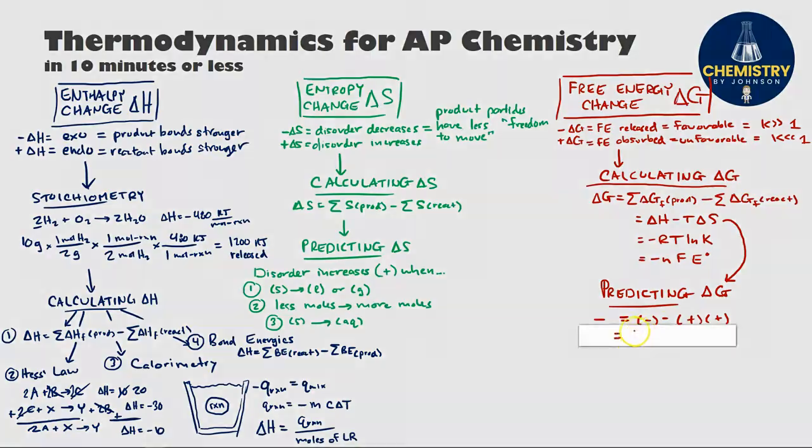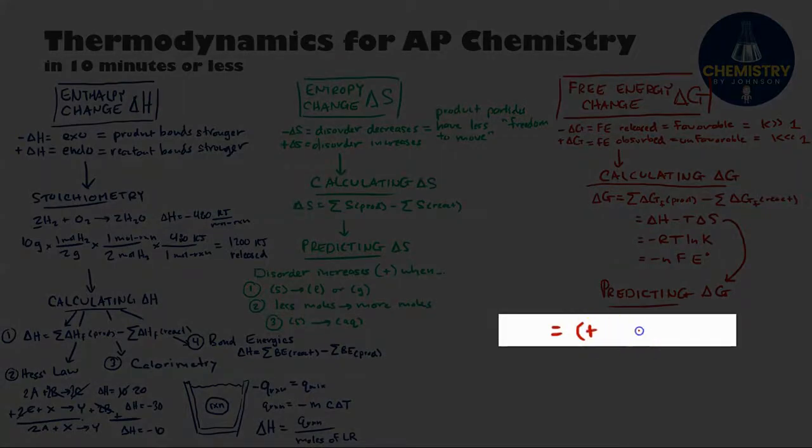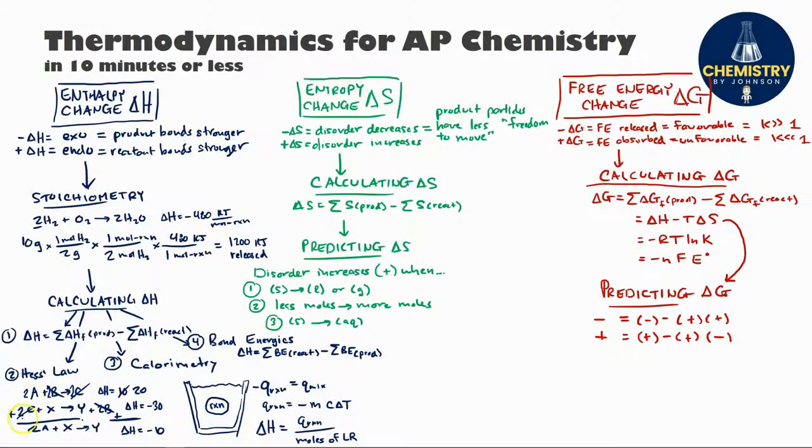If, however, the reaction was endothermic, so we'd have a positive delta H, still positive temperature because we're using Kelvin, but if entropy was decreasing, so a negative delta S, in that type of scenario, you have a positive number minus a negative number. This T delta S term becomes negative, and subtracting a negative means you're really just adding a number. So a positive number plus some other number, here you'd be guaranteed to get a positive result for your delta G. This type of reaction is not favored by enthalpy or entropy and will never be thermodynamically favorable.